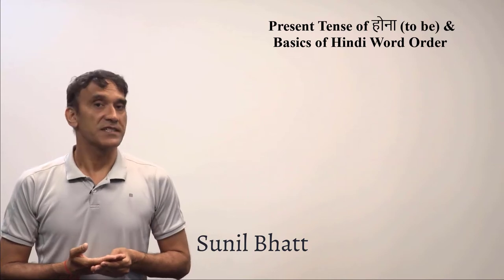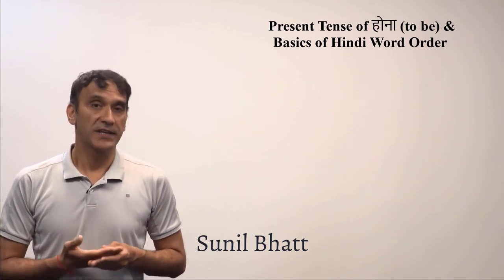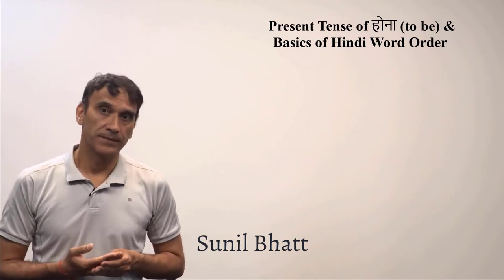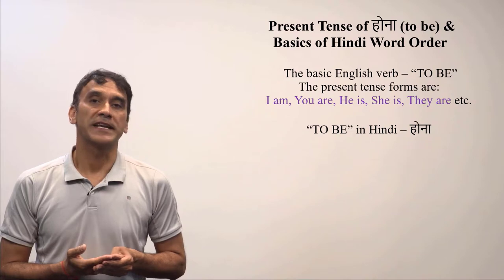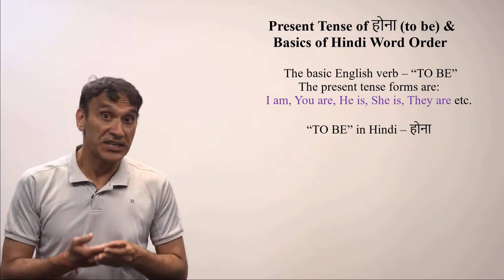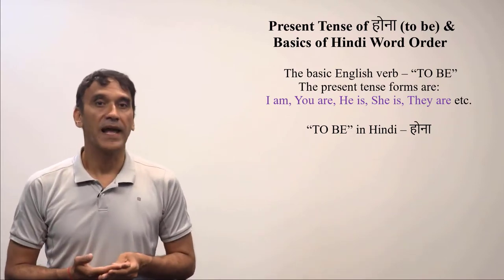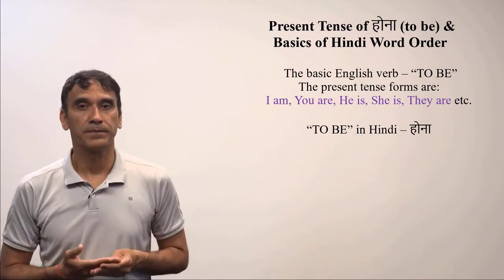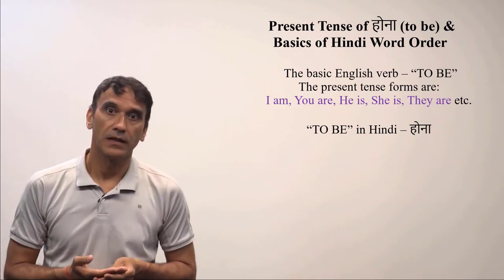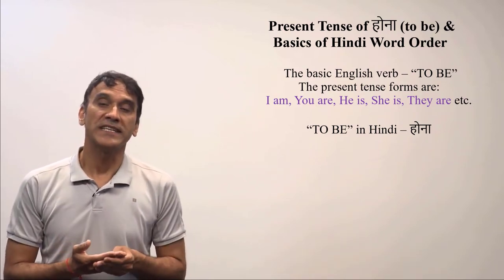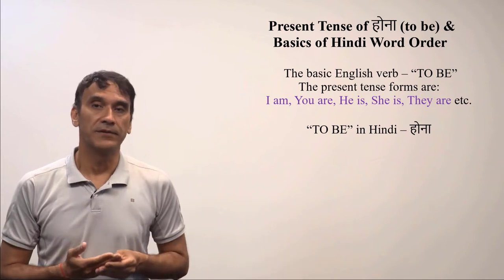The next grammar point is the present tense of the verb Hona and the basics of Hindi word order. In Hindi, all verbs in infinitive form — also called dictionary form — have the ending 'na', as in Hona. There is no exception to this rule. Hona means 'to be' and it is the basic Hindi verb.